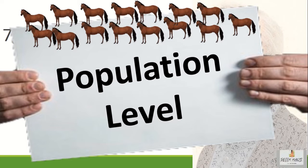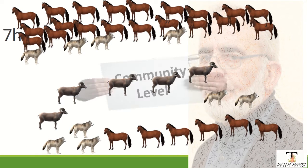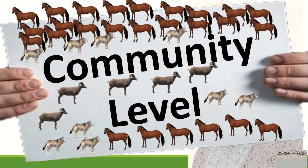The whole group of people, when we count them, they are the population. A species such as humans can form a population. Then the community level is when you see multiple species together — you see a community.